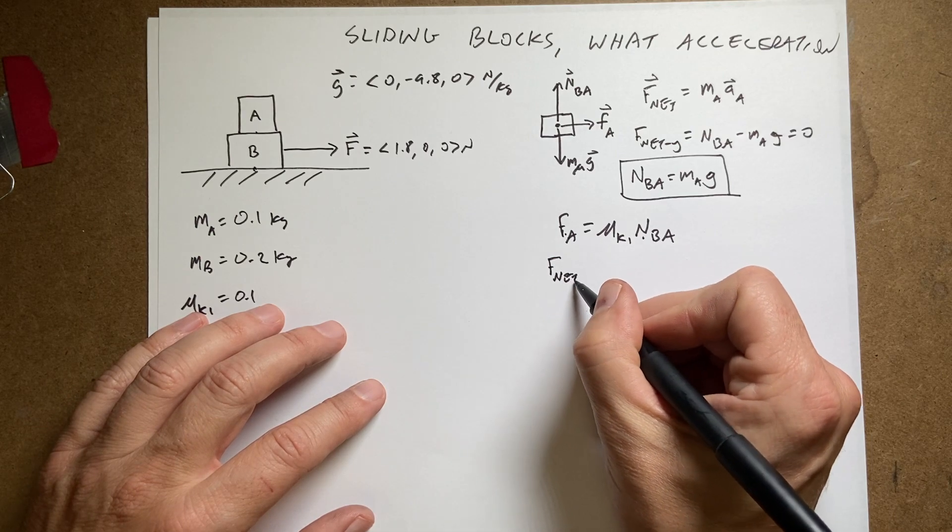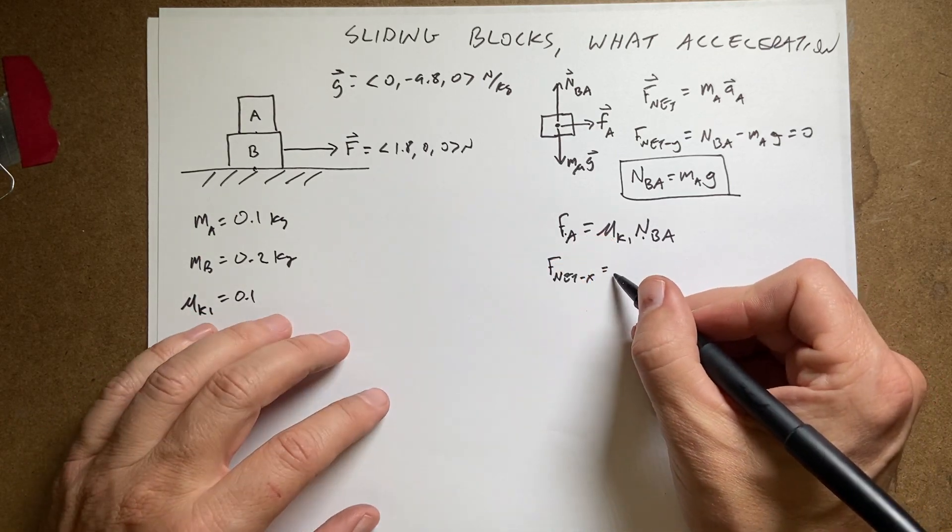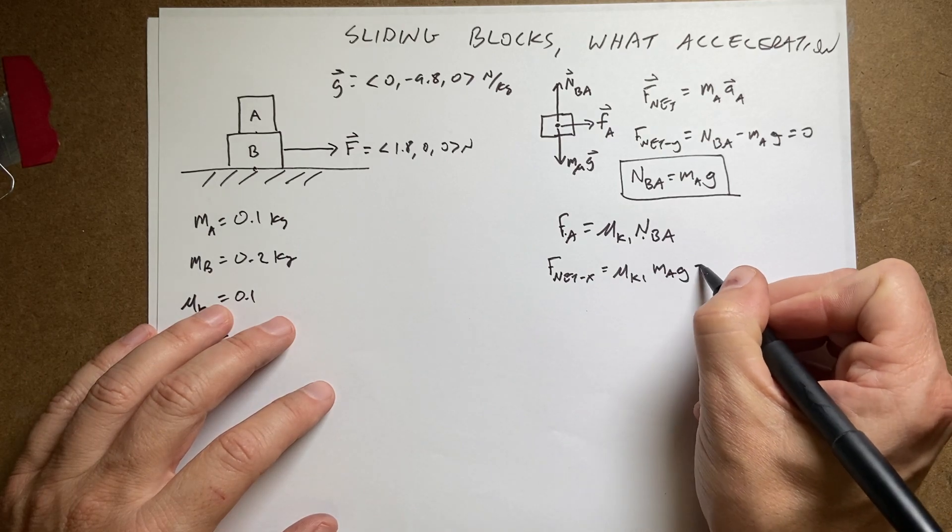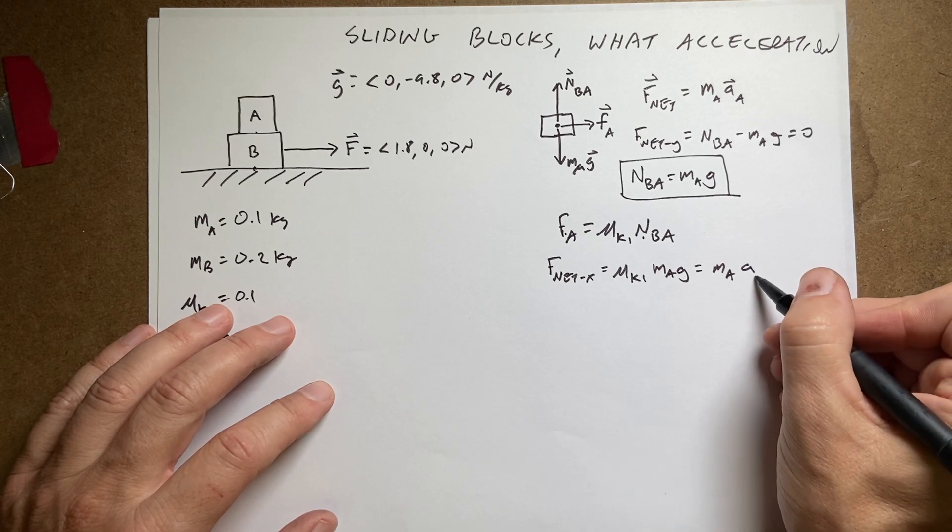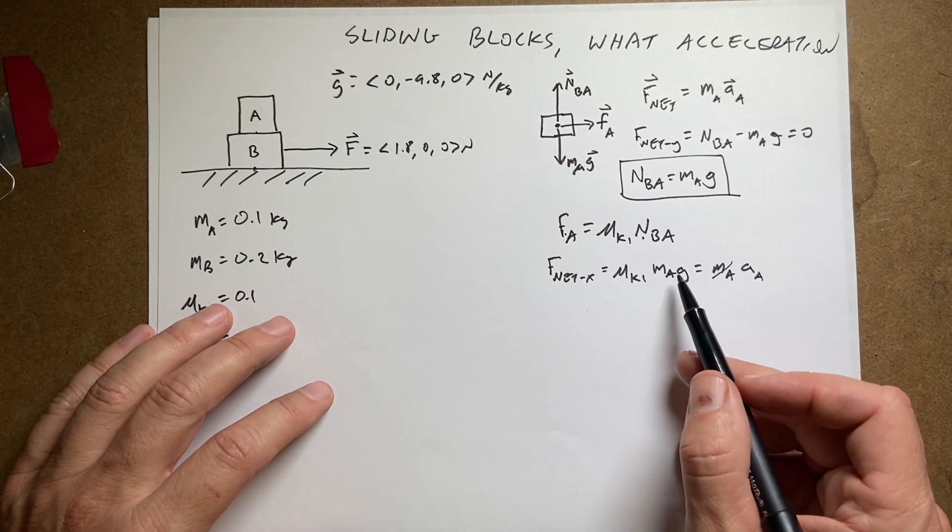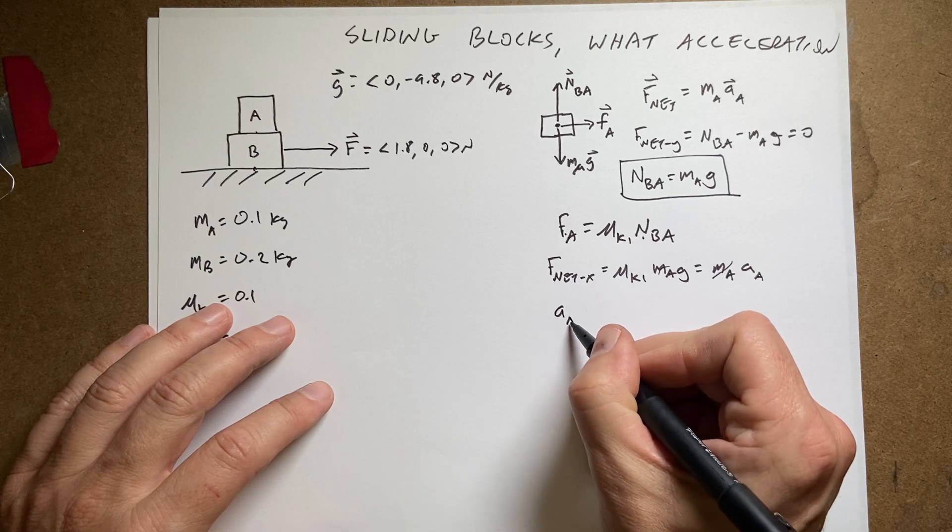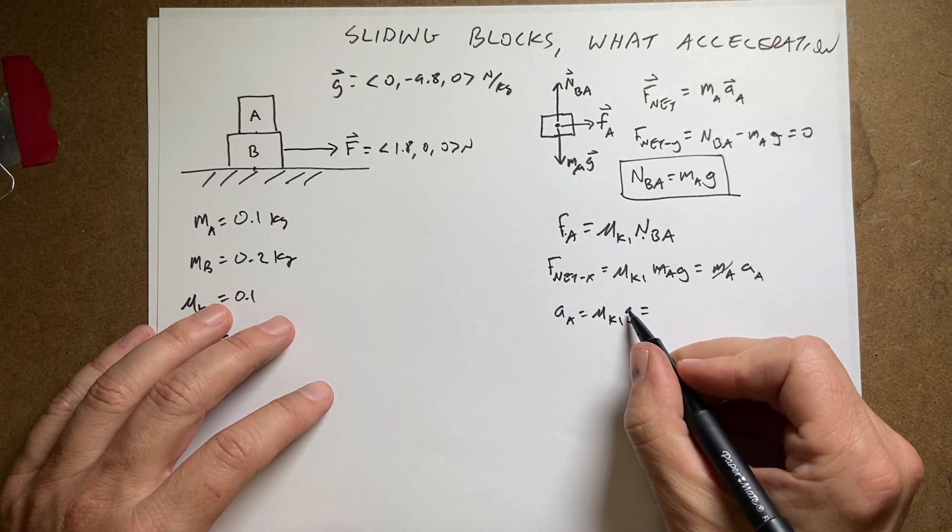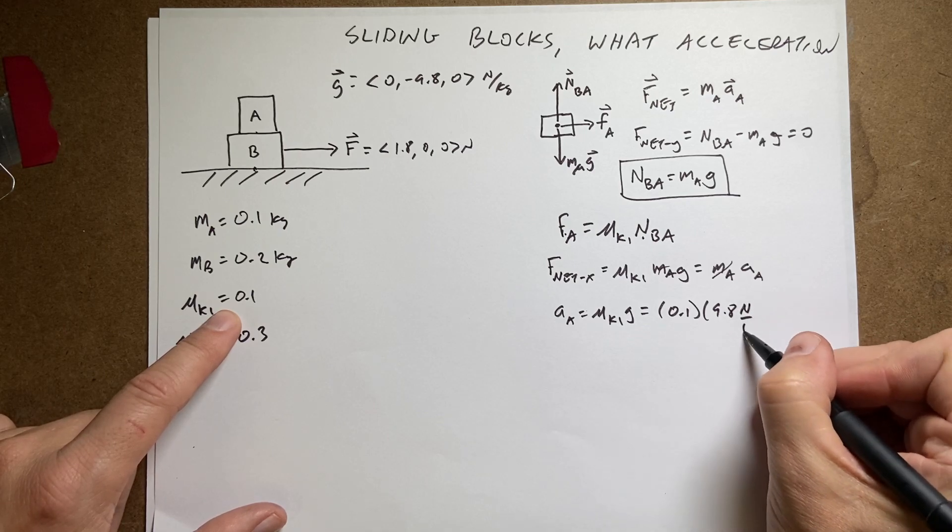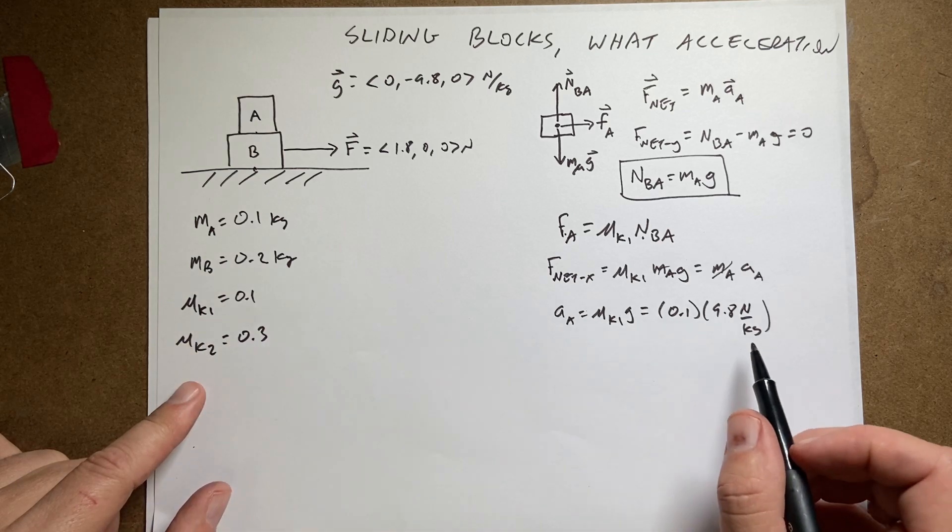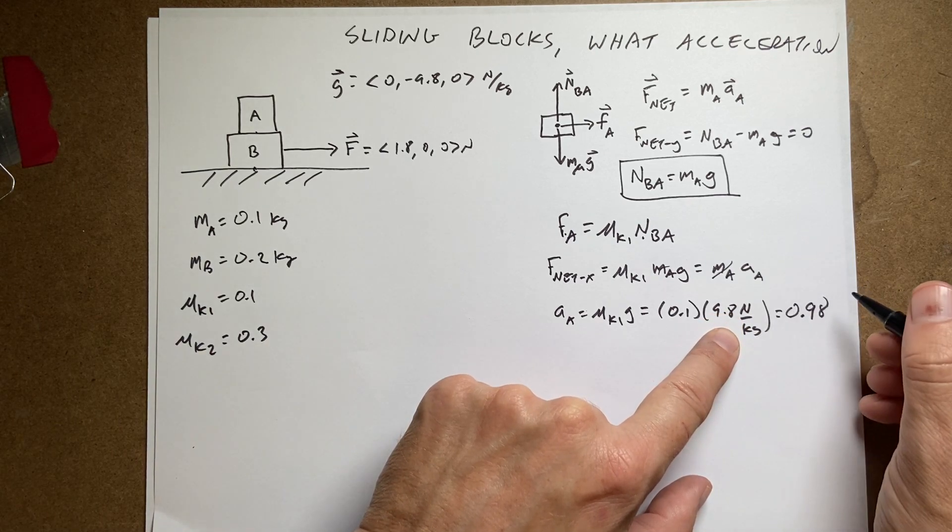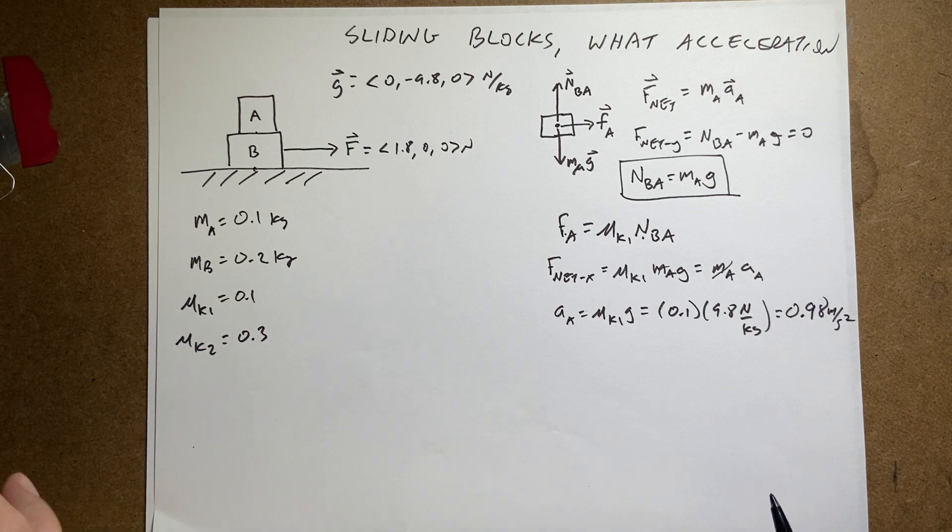So I can say F net X equals mu K 1 N B. And instead of N B A, I'm going to put M A G, and that's going to be equal to M A A in the X direction. So now I can solve for the acceleration, the mass cancels. And I get A A equals mu K 1 G. So this is going to be mu K 1 0.1, G is 9.8 N per kilogram. The coefficient of friction has no units. So this is going to be 0.98, and then a newton per kilogram is also a meter per second squared. So that's the acceleration for the top block.